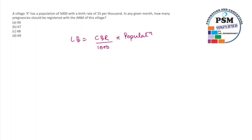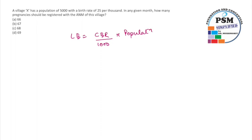Let me substitute the values. The crude birth rate here is 25, divided by a thousand because it is per thousand live births, into the population which is 5000. So what we get is 125.